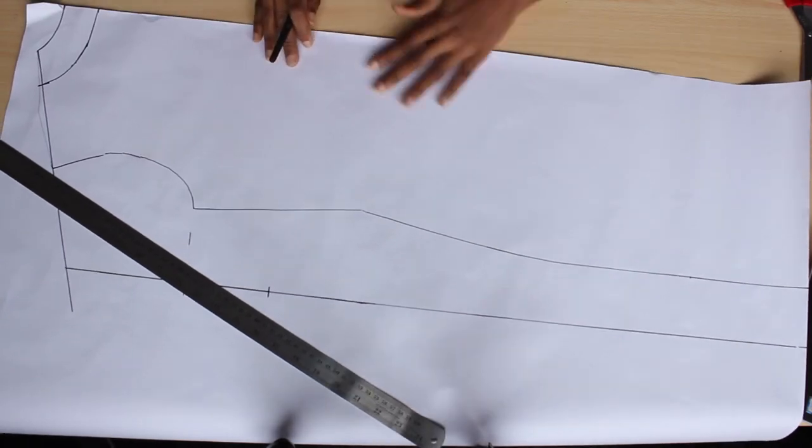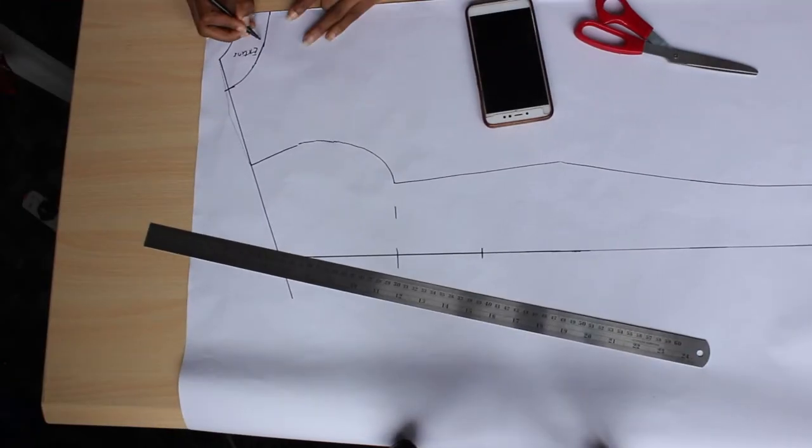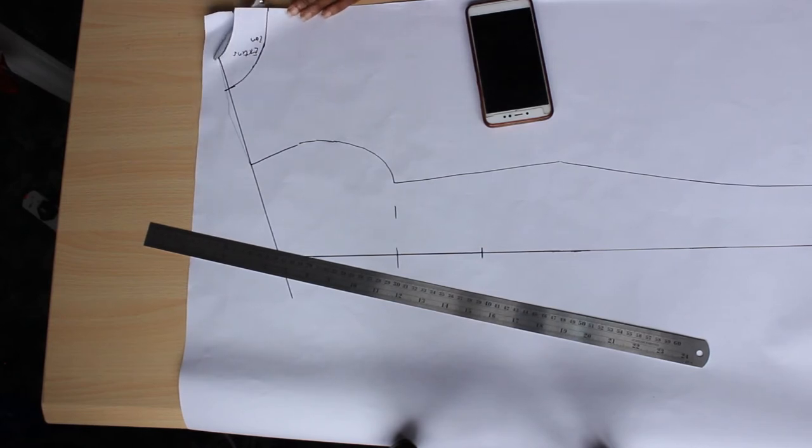This is what my back pattern looks like when I'm done. I'm going to get my scissors and just cut that out.